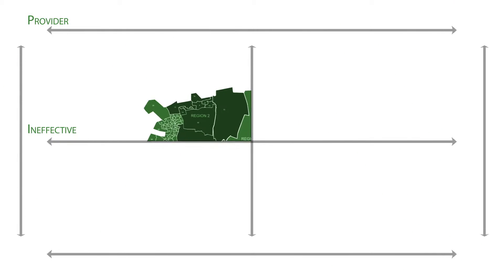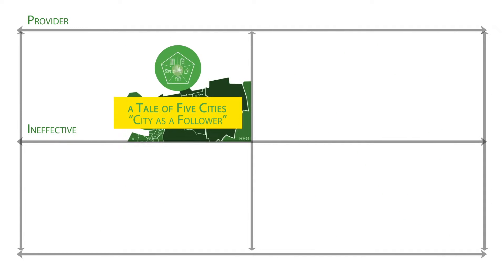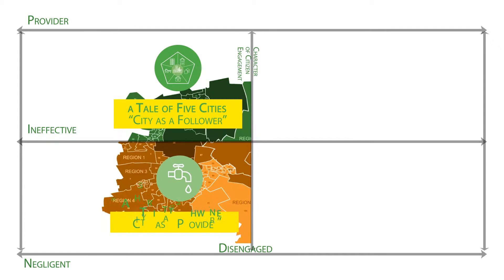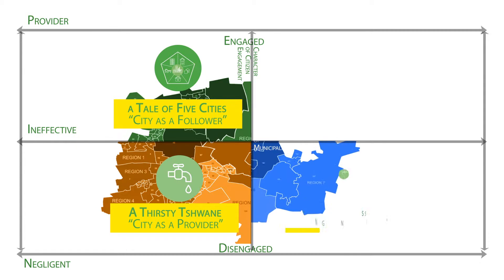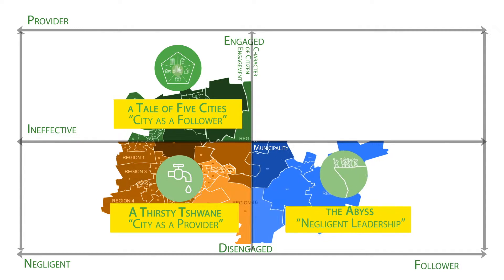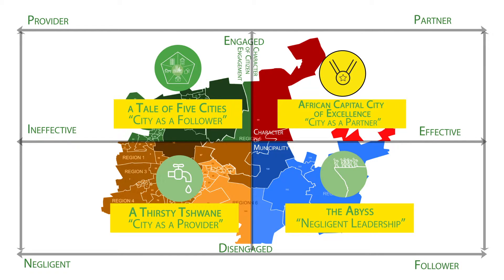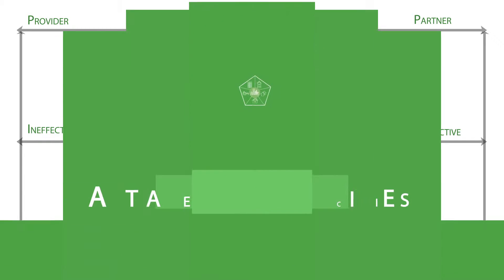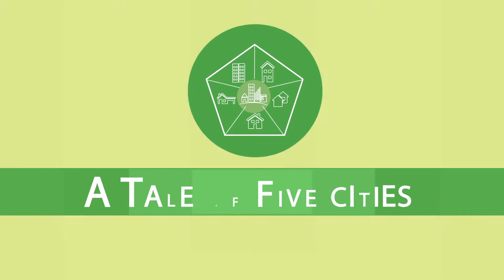The first is called a Tale of Five Cities. The second, a Thirsty Tshwane. The third, a scenario called the Abyss. And a fourth shows us the African Capital City of Excellence. Let's look at the Tale of Five Cities.